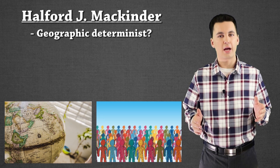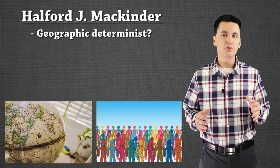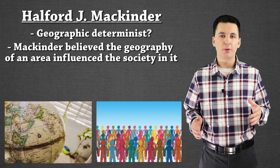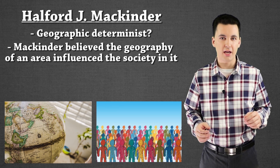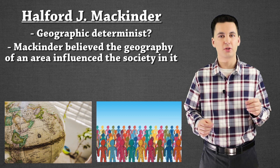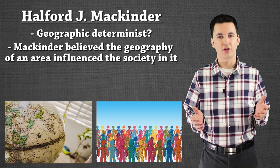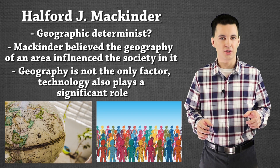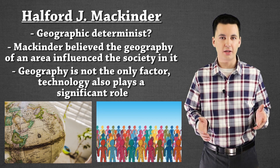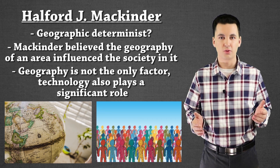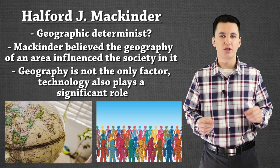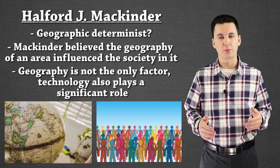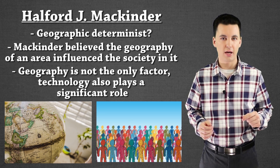Some believe that Mackinder was a geographic determinist — he viewed society as being influenced by their geography. He looked both at the past and the current day to see exactly how society has been shaped by terrain and geographic features. He also acknowledged the role of technology, so he didn't completely discount humans and their ability to adapt. Technology and geography were the big focus of his theory, as he believed those two factors would determine what would happen to a geographic area.